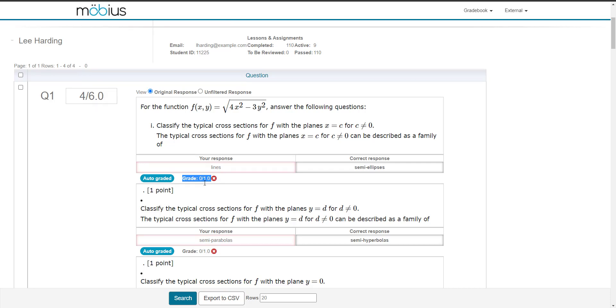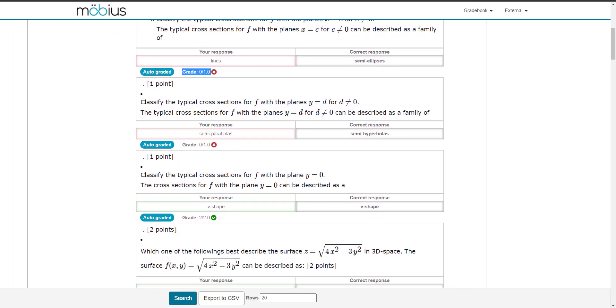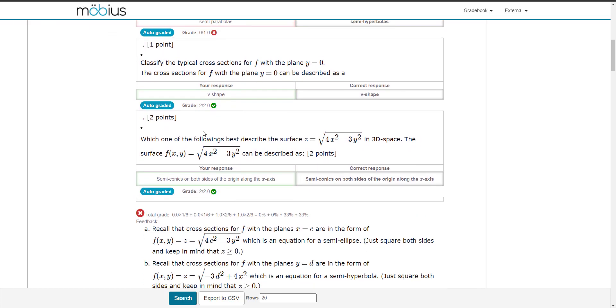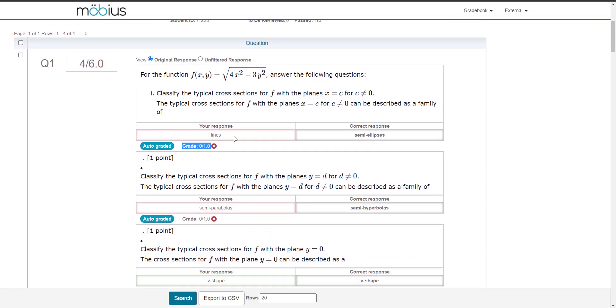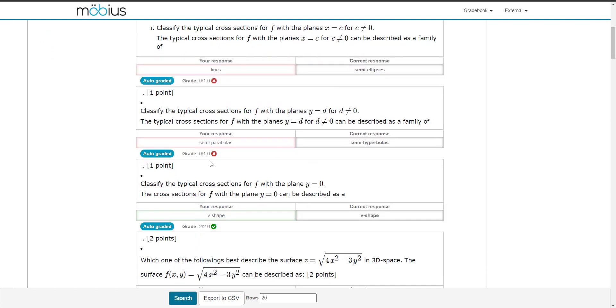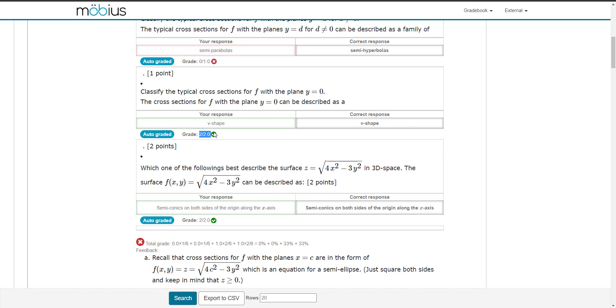And then there is the part grade for this section of the question. Question one, for example, has four sections. So this is section one, section two, section three, and lastly section four. Each of these have their own part grade. I'll scroll back up to section one and you'll see that I achieved zero out of one on my first section of question one and it's marked as incorrect. Same with section two. But then section three and section four I achieved full marks. So I achieved full part grades for those two sections.